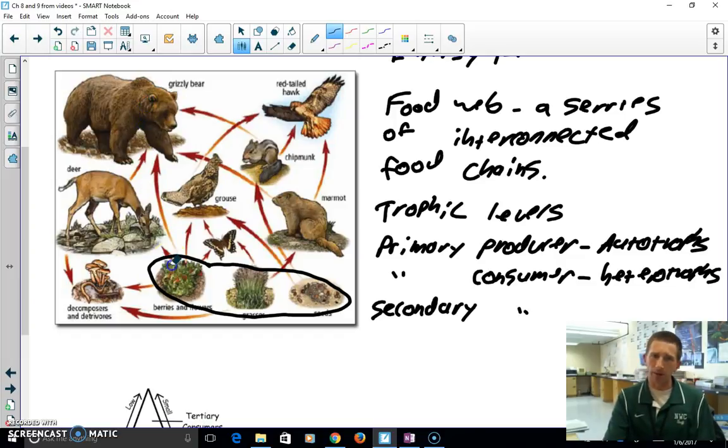Now, if the bear eats the berries directly, now the bear is a primary consumer. And we can even look at the red-tailed hawk right here. So in this food chain, we kind of top out at tertiary consumer. So tertiary, T-E-R-T-I-A-R-Y, tertiary consumer.